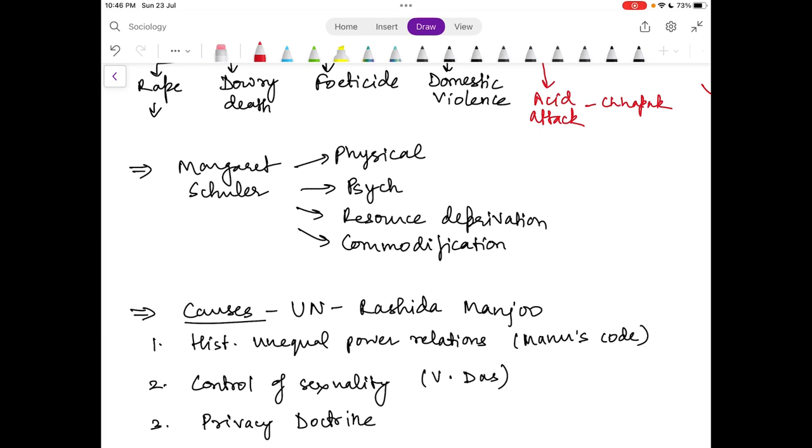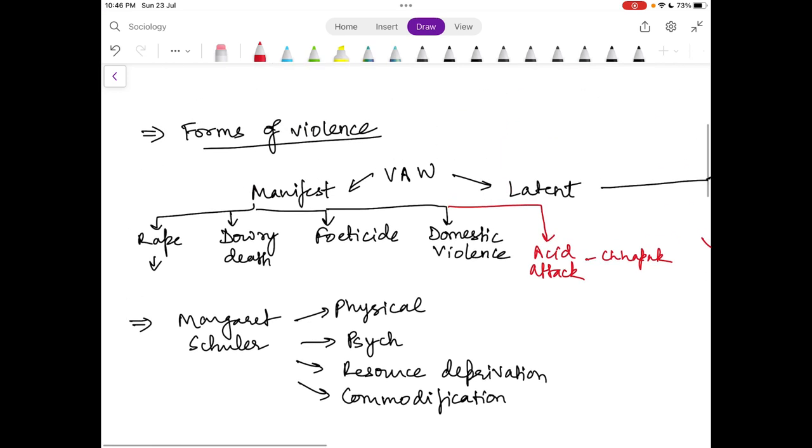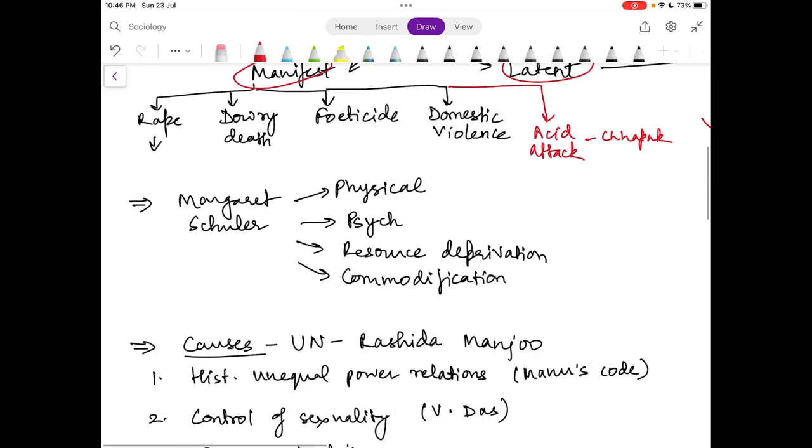Margaret Schuller also identifies some other forms of violence that could be physical, psychological, based on resource deprivation, and commodification. It's basically just a reiteration of the manifest and latent forms of violence. Physical would include things like rape, dowry death, or domestic violence. Psychological could be confinement, forced marriage, or any other sort of threat or mental coercion. Resource deprivation could be in terms of material deprivation like lack of access to nutrition, food, or living space, and it can also be in terms of intellectual deprivation like lack of access to education.